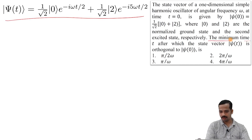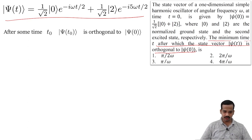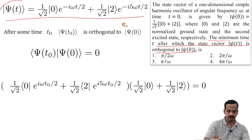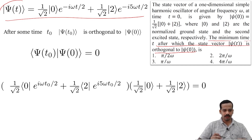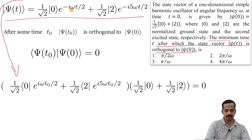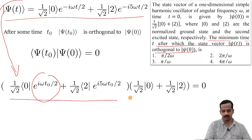The question asks for the minimum time t after which psi(t) is orthogonal to psi(0). Let me call this minimum time t-naught. After time t-naught, psi(t-naught) is orthogonal to psi(0), meaning the inner product between them vanishes: ⟨psi(0)|psi(t-naught)⟩ equal to 0. I have taken the bra vector corresponding to psi(0), so e to the power minus i theta became e to the power plus i theta in the bra.